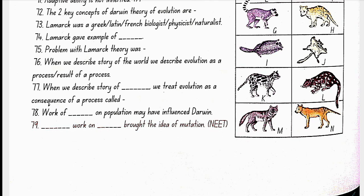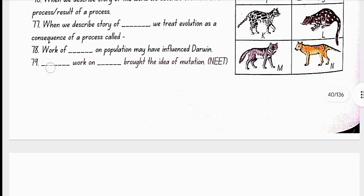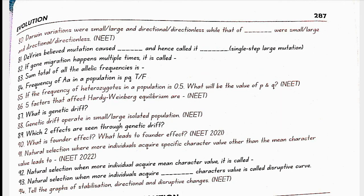Work of Thomas Malthus on population may have influenced Darwin. Hugo de Vries work on evening primrose, which is Oenothera lamarckiana, brought the idea of mutation. Darwinian variations were small and directional, while that of Hugo de Vries were large and directionless. De Vries believed mutation caused speciation and hence called it saltation. If gene migration happens multiple times, it is called gene flow.